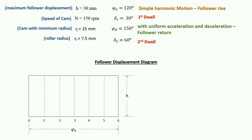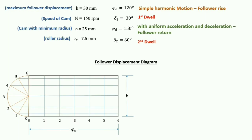For Simple Harmonic Motion, we draw a semi-circle on the left side and divide it into 6 equal parts. From each point on the semi-circle we draw horizontal lines. We mark the intersection points as 0' to 6' and join all these points with a smooth curve. This is the final displacement curve for follower rise.